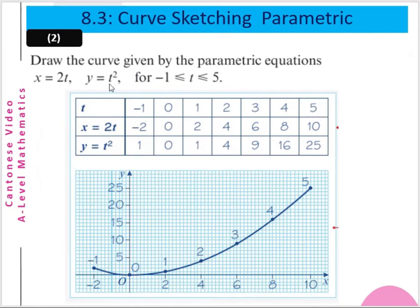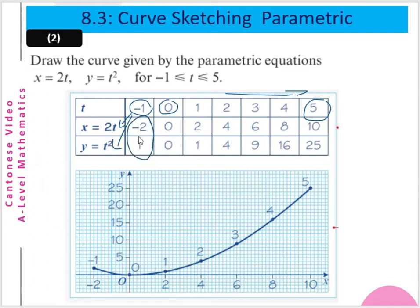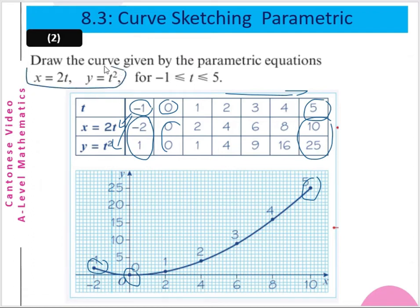Example 2: Draw the curve given by the parametric equation x equal to 2t, y equal to t squared, for t from −1 to 5. Substituting, you get pairs of values: (−2, 1), then (0, 0), and every other point until you get (10, 2.5) here. Joining all these points together, you get the curve of these two parametric equations.